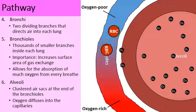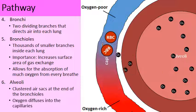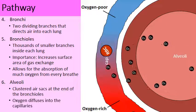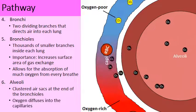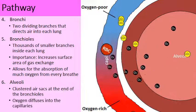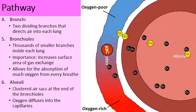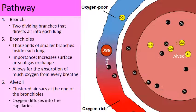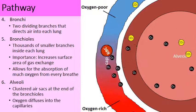Oxygen diffuses from a high concentration to a low concentration and is picked up by a red blood cell and carried away. In reality, it's a big flood of oxygen diffusing into the capillary. While that's happening, carbon dioxide is being released and diffusing out of the capillary into the alveoli — from a high concentration in the capillary to a low concentration in the alveoli. This is the exchange of gas: carbon dioxide is exchanged for oxygen.